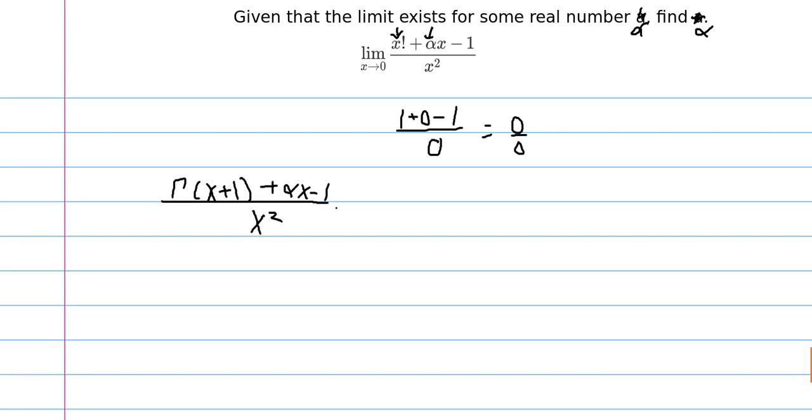Now if we use L'Hôpital's rule, we get the derivative of the gamma function at x plus 1 plus alpha divided by 2x. As x goes to 0, the denominator goes to 0.